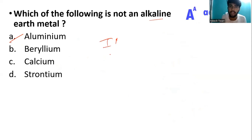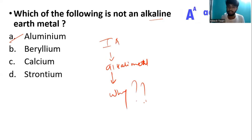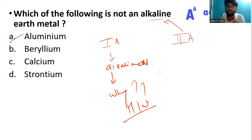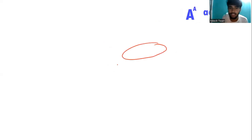Why is it called an alkaline earth metal? You have to know that — that is your homework. What does 'alkaline metal' mean? That is also your homework. For the alkaline earth metals, you can use the entire diagram. I told you the figure.